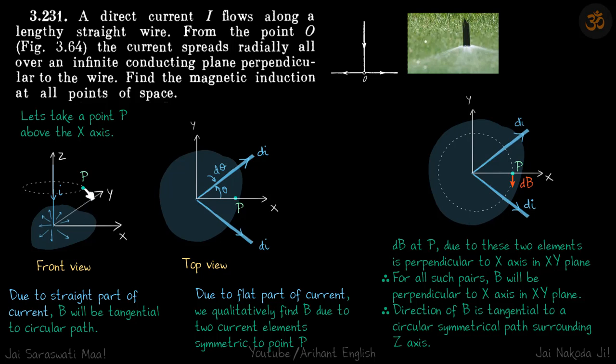What result we get at this point will be same as all the results which we will get on all these radial points. This is the front view where z is going up, and this is the top view where you cannot see the z axis. This is the xy plane. Let us see step by step and analyze this situation.